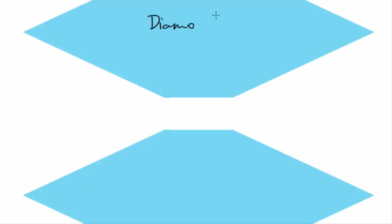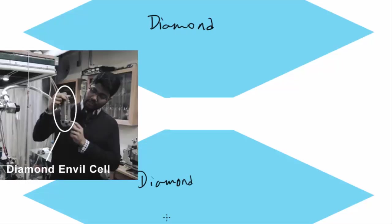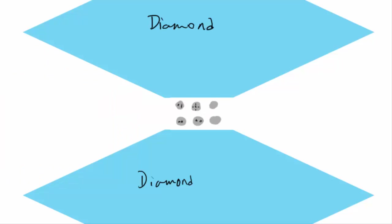So what they did was they made two synthetic diamonds sit at an opposite side in a device known as diamond anvil cell. And in between, they made hydrogen sit in liquid state.